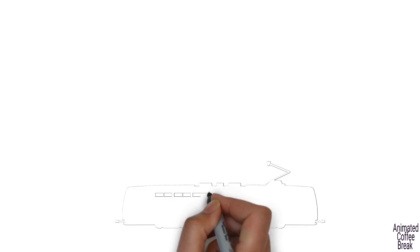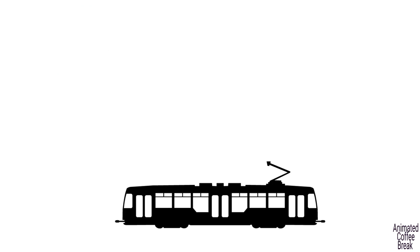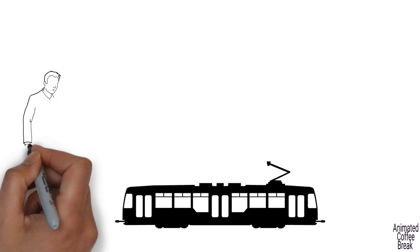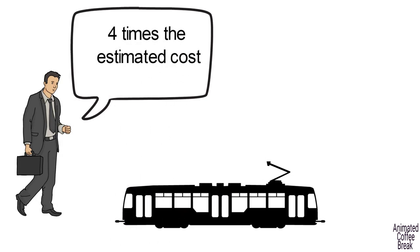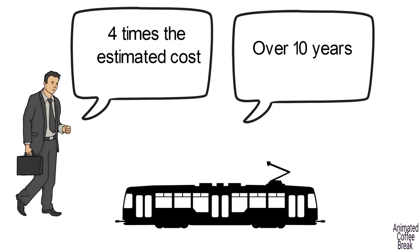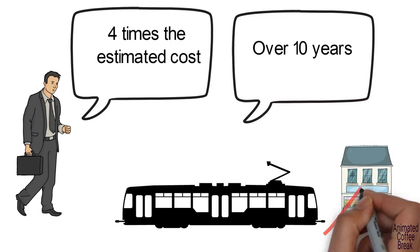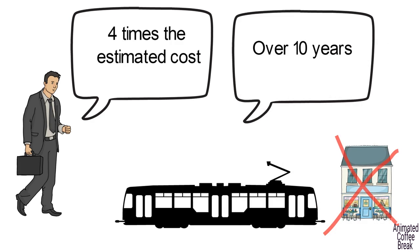In my hometown, there is a perfect example of such a situation. The government has built a light rail train that works on electricity. The project's actual cost ended up being more than four times higher than the estimated cost. The total construction time took 10 years, which severely damaged businesses located close to the railroad tracks.